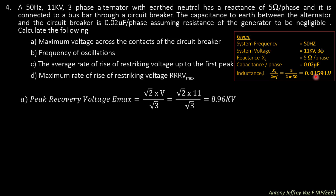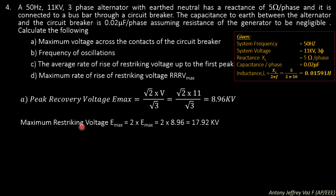First, find the maximum voltage across the circuit breaker contacts. The peak recovery voltage Emax = root 2 into V divided by root 3 = root 2 into 11 / root 3 = 8.96 kV. The maximum restriking voltage across the contacts is 2 into 8.96 = 17.92 kV.